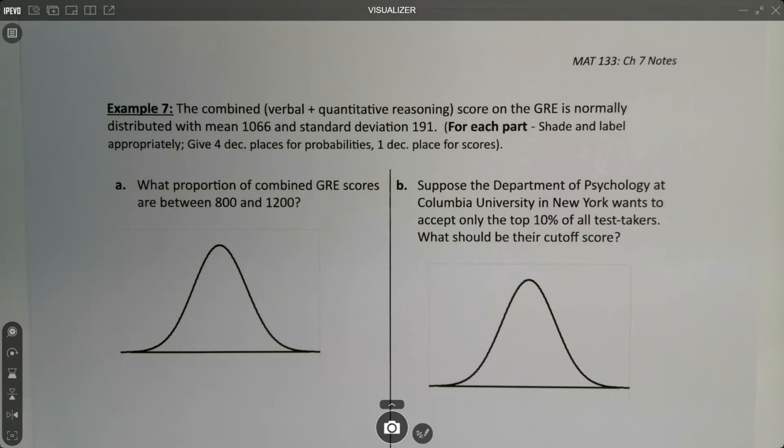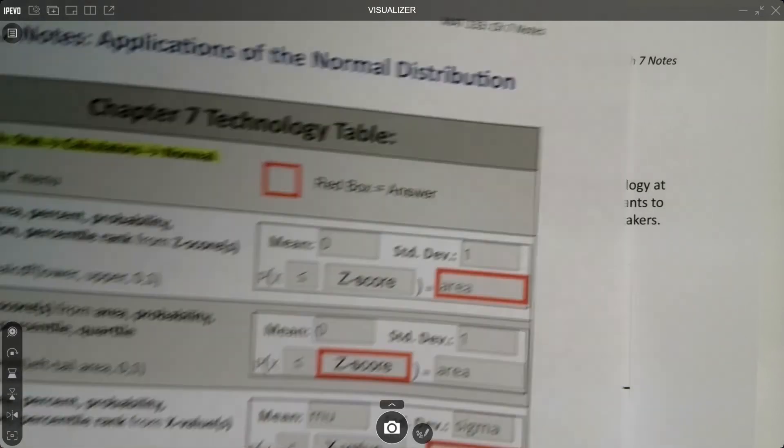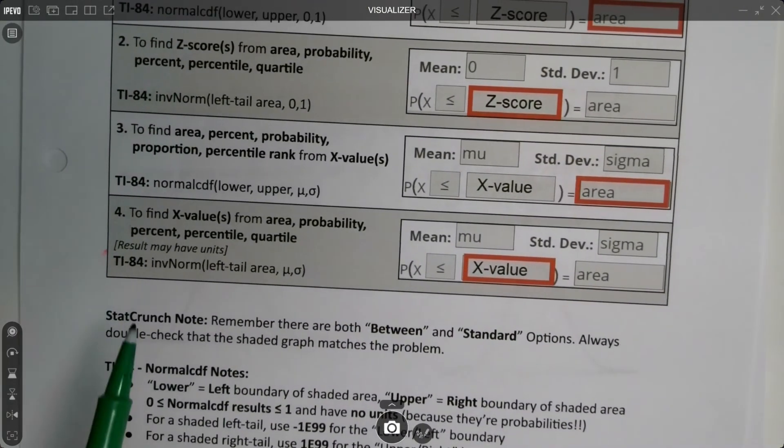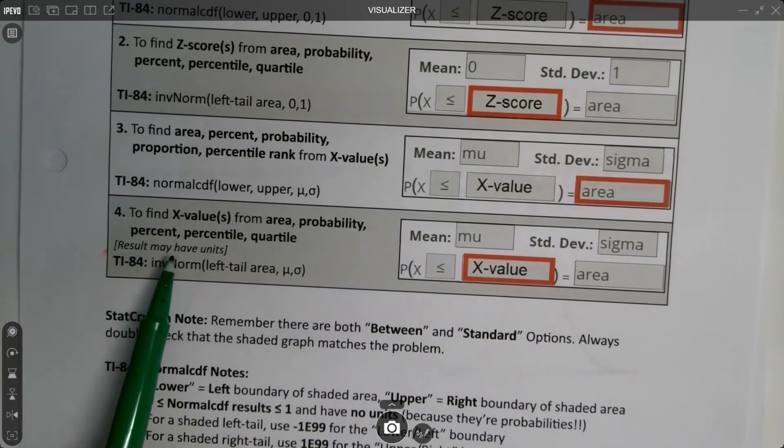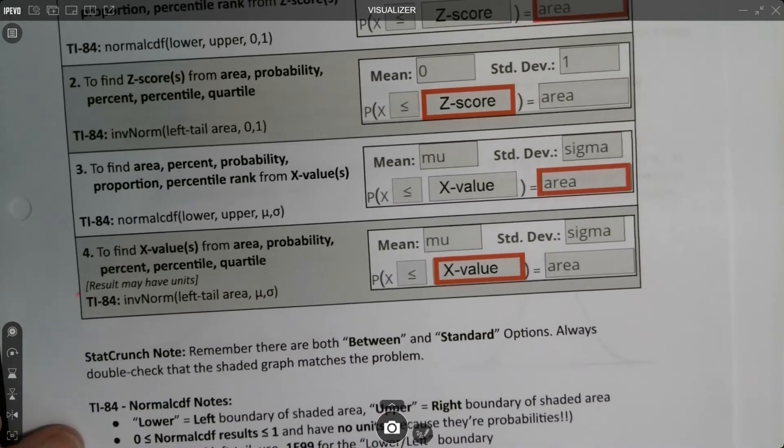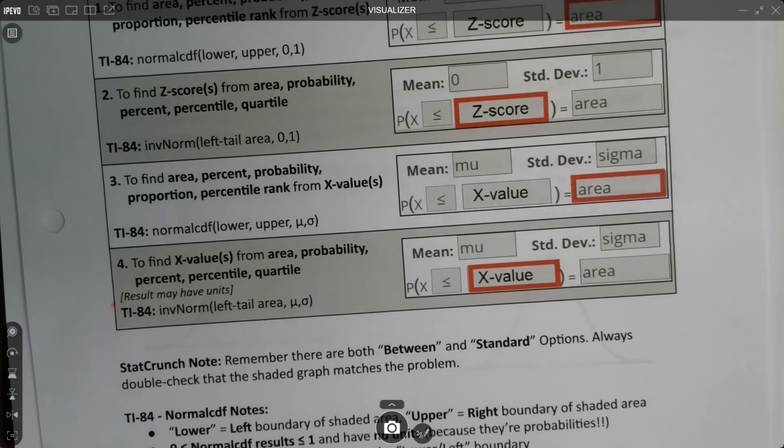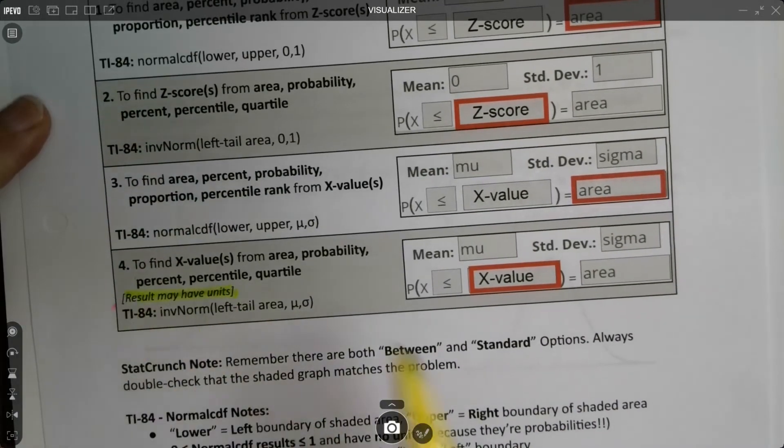For the final example here we're going to kick it up a notch. The only other thing we can do is to put context with labels and units. Now remember I mentioned way back that sometimes we may have results that have units. Well this is the page where we're going to see it.